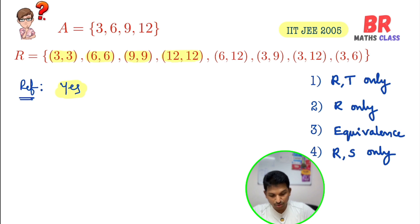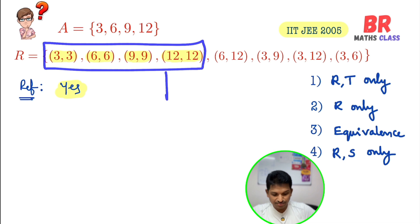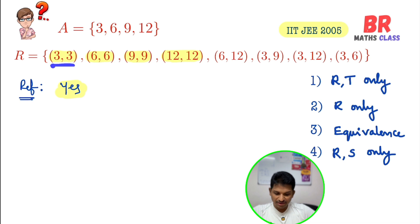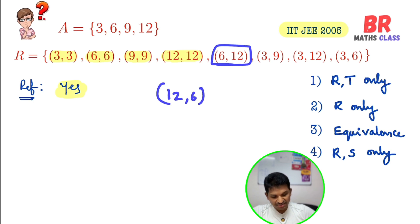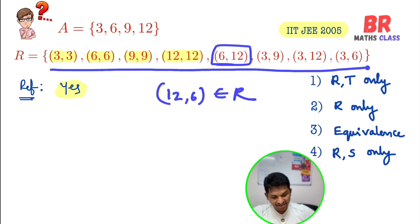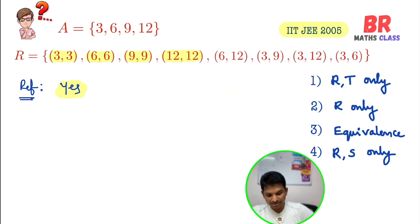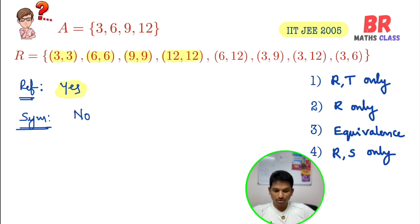Now I'll check symmetric. Elements like (3,3), (6,6), (9,9), (12,12) always pass the symmetric test — the reverse of (6,6) is also (6,6). Now come to (6,12): is (12,6) there in the relation? No, (12,6) does not belong to the relation. So when it comes to symmetric, it is not symmetric.